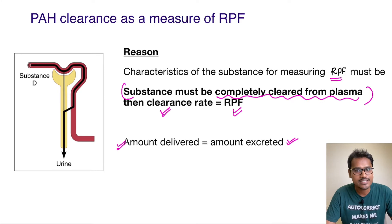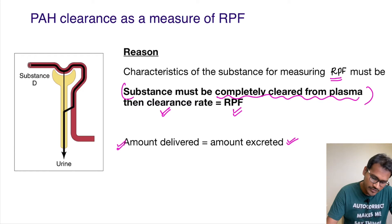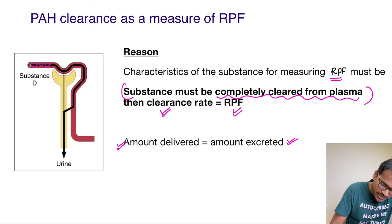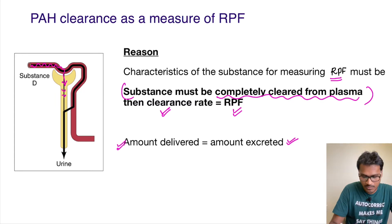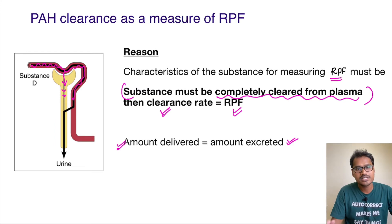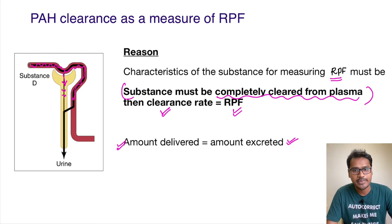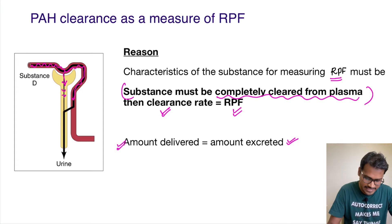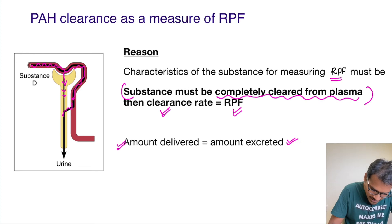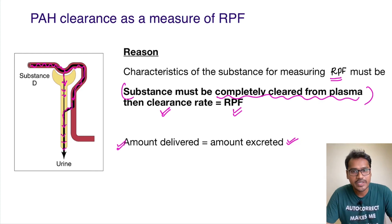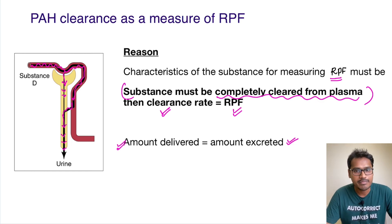PAH is one substance that has this property, wherein the amount delivered is equal to the amount excreted. Whenever PAH enters the kidneys, it is first filtered to some amount and the rest goes through the blood vessels. After that, most of the PAH is secreted back into the renal tubules and excreted. So the plasma going to the kidneys has its PAH levels almost completely cleared.